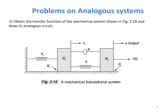Now here is an example to show the force voltage and force current analogy. We have masses M1 and M2. Mass M1 is connected to a fixed wall through a spring K1, and M1 is connected to M2 using a dashpot with friction B and spring coefficient K. Force F(t) is applied to mass M2. Due to the movement of M1 and M2, there is friction represented as B1 and B2. The resulting displacements are represented as X and X1.